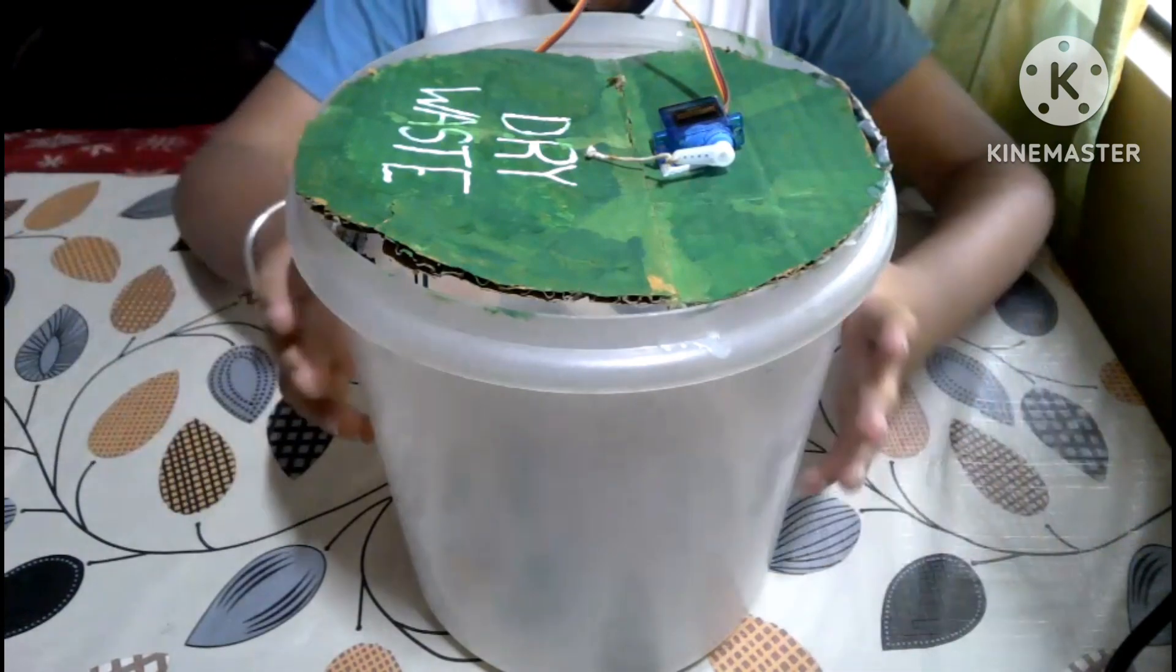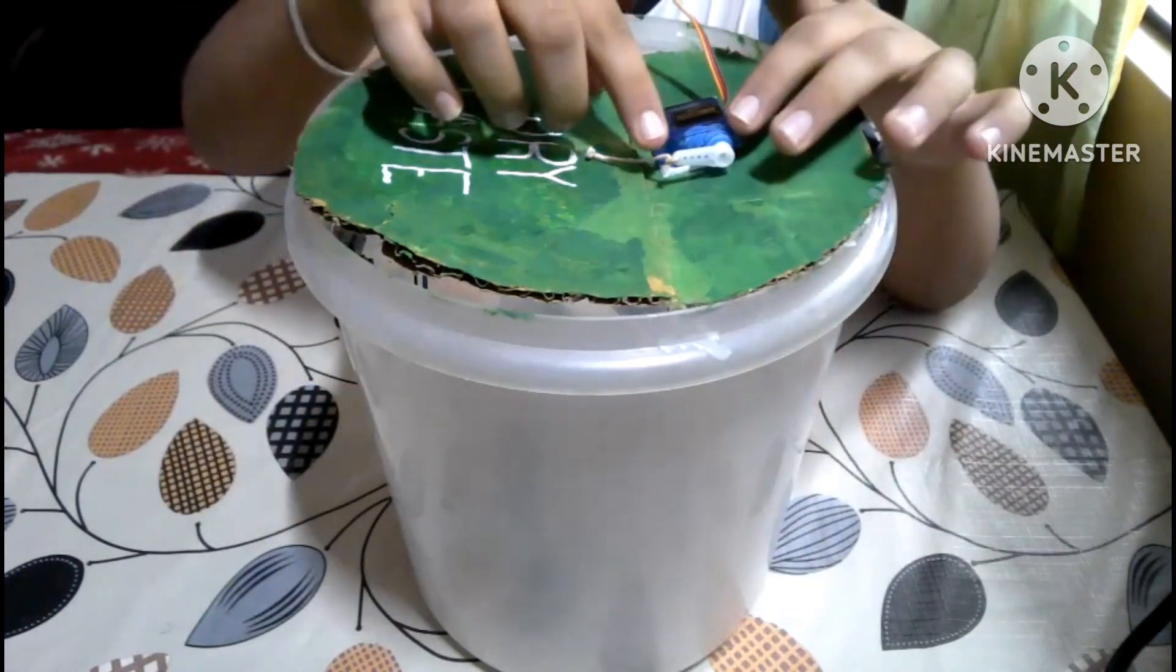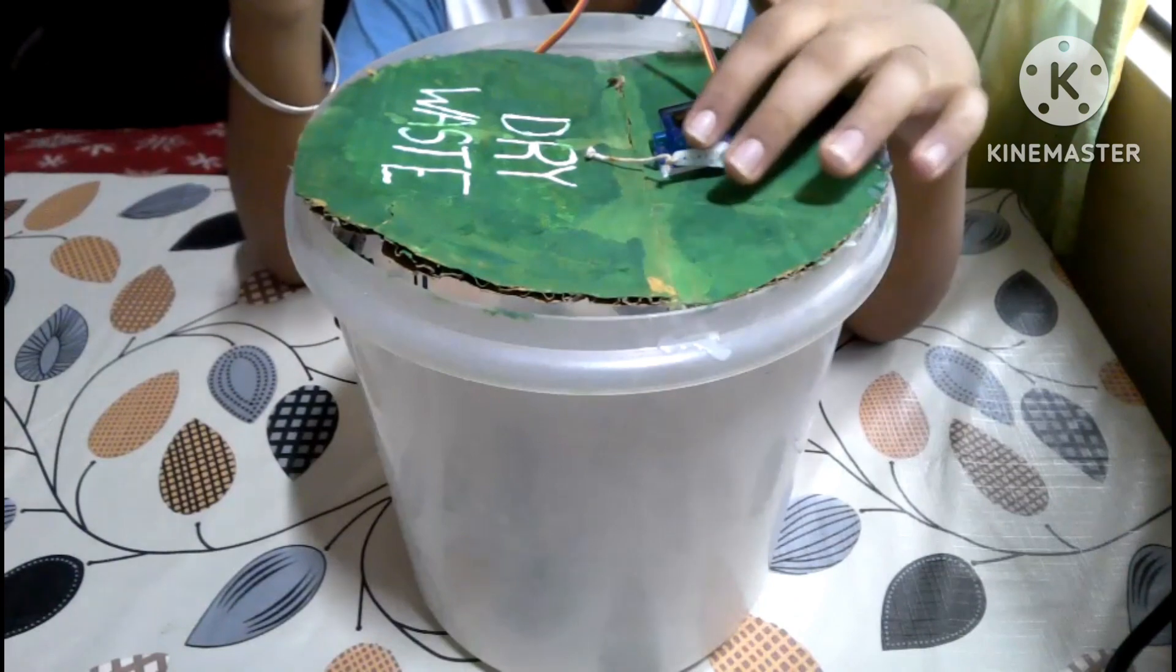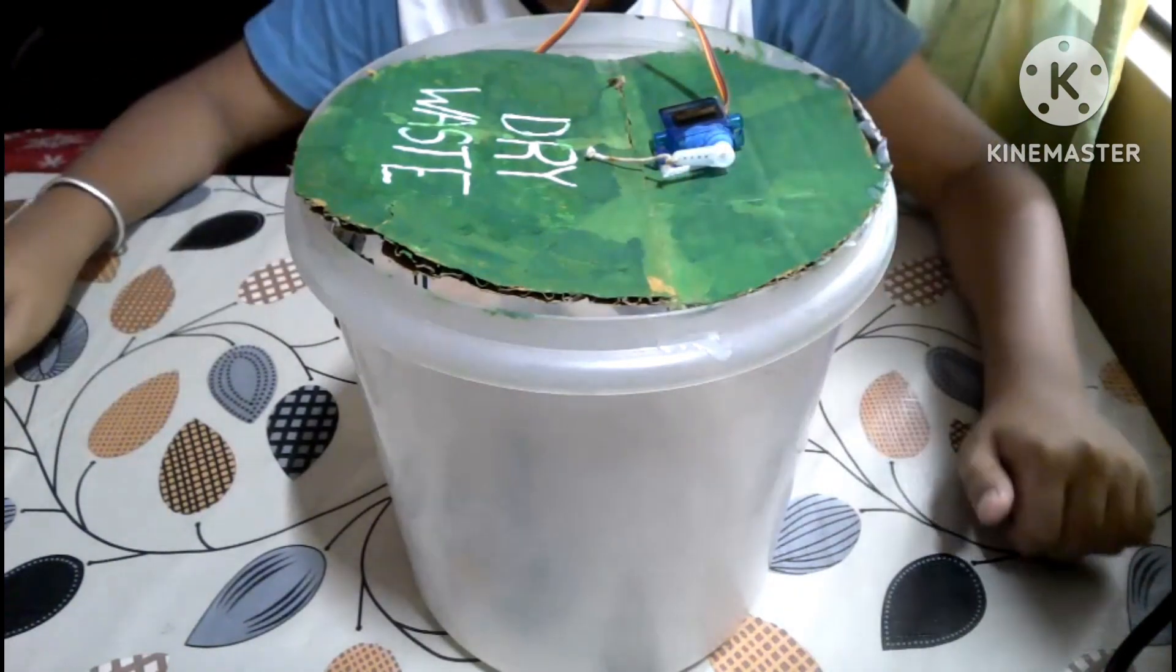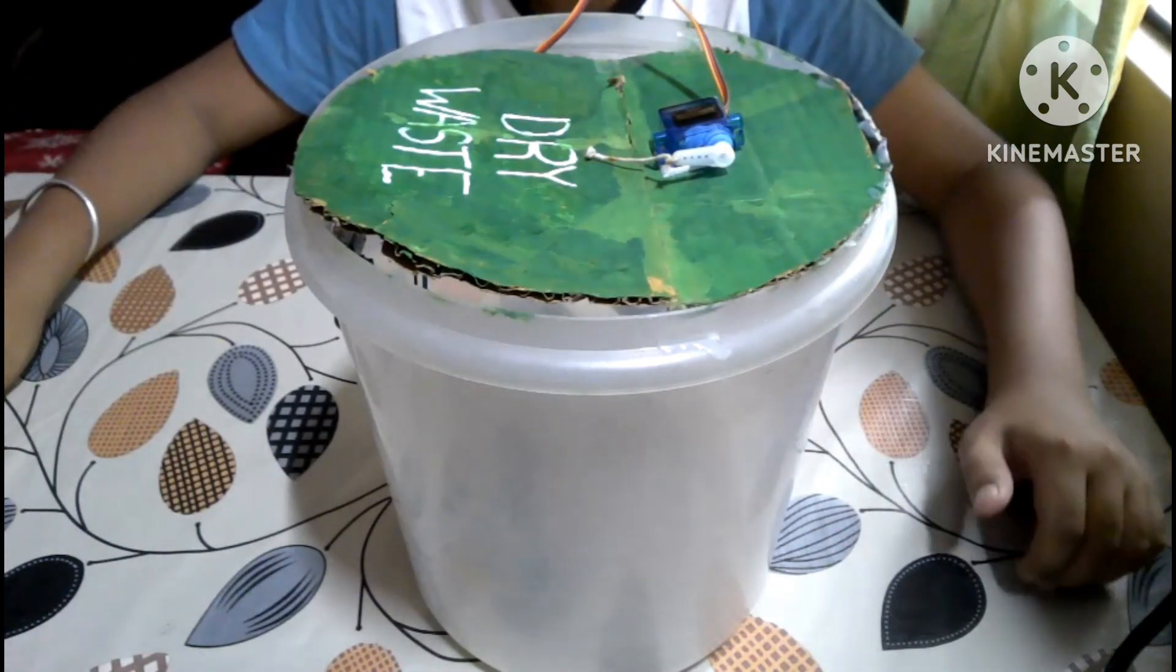Now take the string you used to tie the button and tie the end to the rotating arm of the servo motor. Your setup is done.